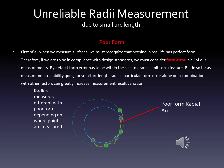When we measure surfaces, we have to recognize that nothing in life has perfect form. Therefore, if we were to be in compliance with design standards, we must consider form error in all of our measurements. By default, form error does have to be within the size tolerance limits on any given feature, but in so far as measurement reliability goes for small arc length radii in particular, form error alone or in combination with other factors can greatly increase measurement result variation.